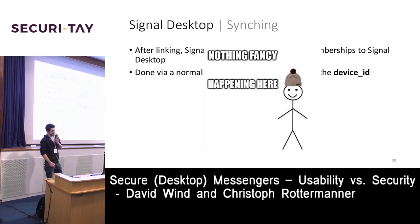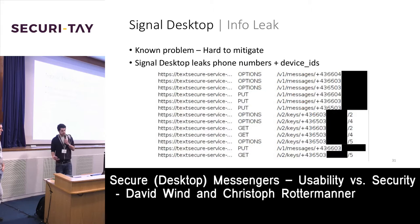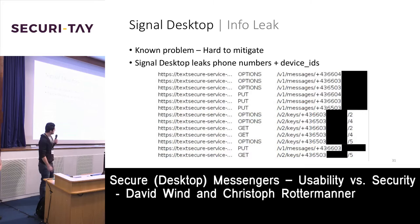The first known vulnerability: Signal Desktop — and Signal Mobile — leaks phone numbers and device IDs. When you can man-in-the-middle the TLS traffic between the client and server, you are able to enumerate the phone numbers of messaging partners and their device IDs.